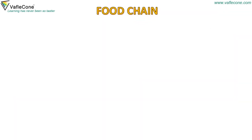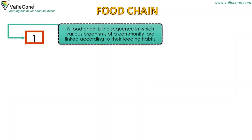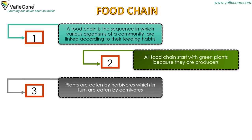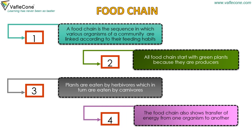A food chain is the sequence in which various organisms of a community are linked according to their feeding habits. All food chains start with green plants because they are producers. Plants are eaten by herbivorous, which in turn are eaten by carnivorous. The food chain also shows the transfer of energy from one organism to another.